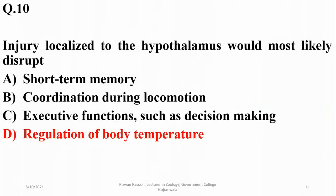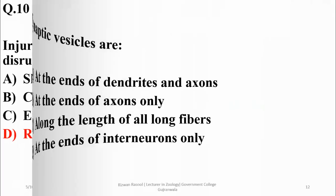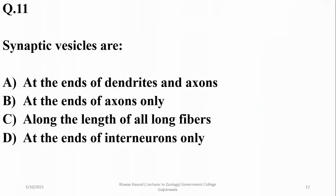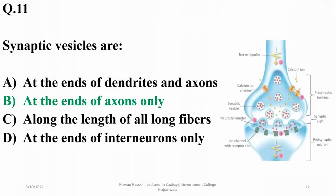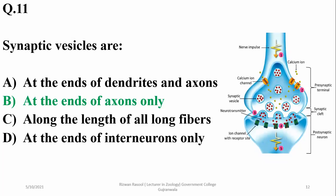Injury localized to the hypothalamus would most likely disrupt regulation of body temperature, rather than short-term memory, coordination, or executive functions. Synaptic vesicles are usually found at the end of axons only, within a synapse.